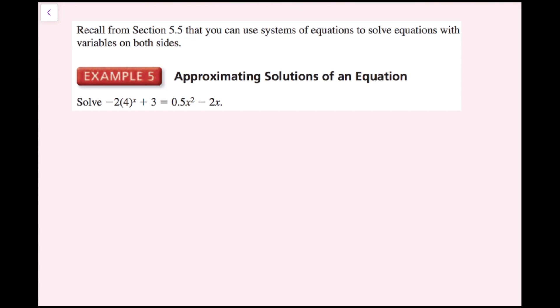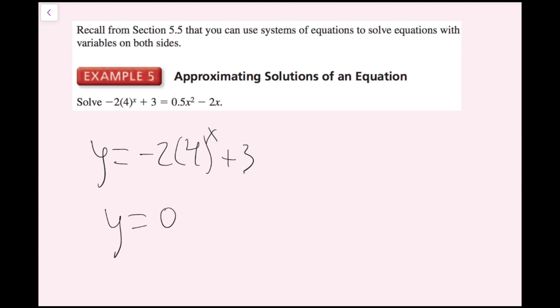Recall that you can use systems of equations to solve equations with variables on both sides. In example 5, we need to solve: negative 2 times 4 to the x plus 3 equals 0.5x squared minus 2x. You've never learned how to solve this without a graph, so we'll approximate the solution graphically by writing two functions: y equals negative 2 times 4 to the x plus 3, and y equals 0.5x squared minus 2x.